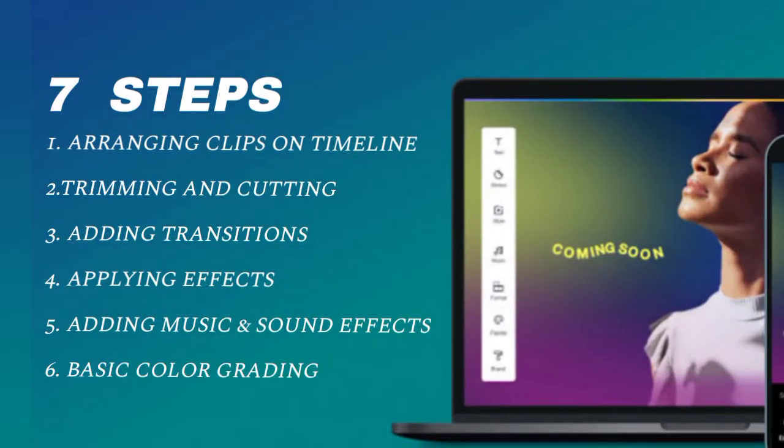Step number six: basic color grading. Here, you will play with color grading to set the right tone and mood for your video. This is done in case you have different clips or footage brought from different places that might not have the same color. This is where you actually blend all the colors together.